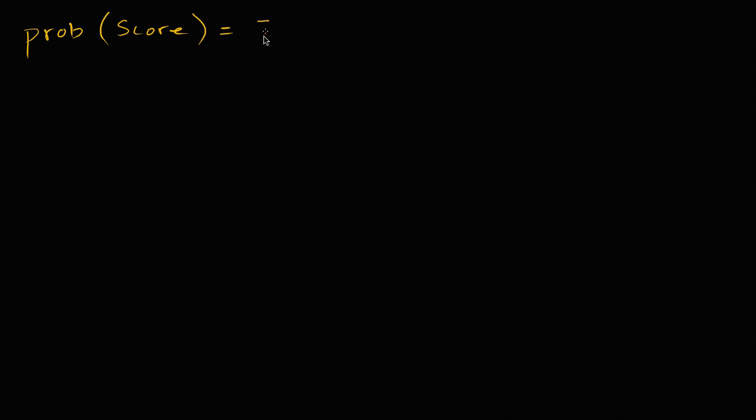Let's say that you know your probability of making a free throw. The probability of scoring a free throw — I'll say scoring rather than making, just because make and miss both start with M and it'll get confusing — let's say the probability of scoring a free throw is equal to 70%, or we could write it as 0.7 as a decimal.